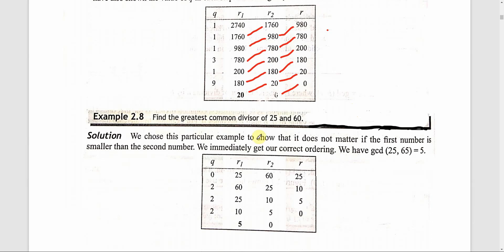Now we will see how to find the greatest common divisor of 25 and 60. By the GCD property, GCD(A, B) is equal to GCD(B, A). So R1 = 25 and R2 = 60. Since R1 is less than R2, we apply the property and swap: R1 = 60 and R2 = 25.